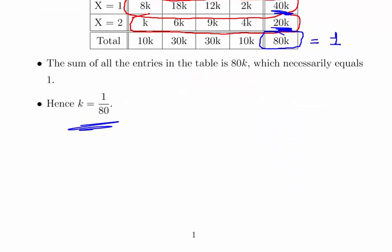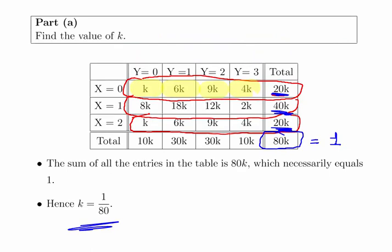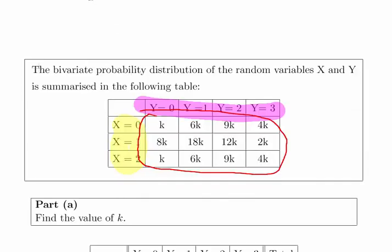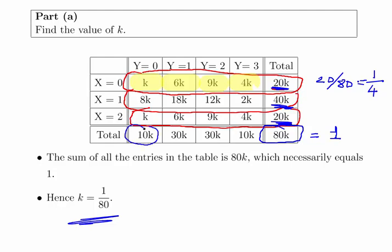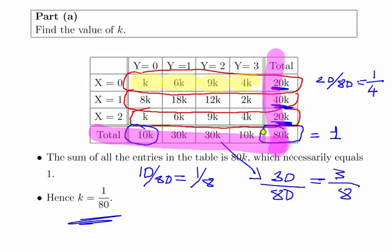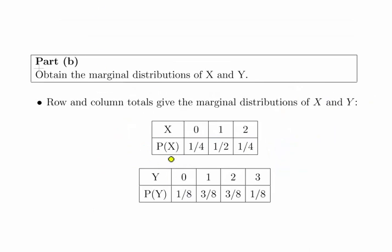Part B asks us to obtain the marginal distributions of X and Y. You may also be asked to calculate the marginal probabilities — for example, 20 over 80 is one quarter. So we have 10K, which is 10 over 80, equal to 1 over 8, and 30 over 80, equal to 3 over 8. Essentially you have to do it for all of the columns and all of the rows.